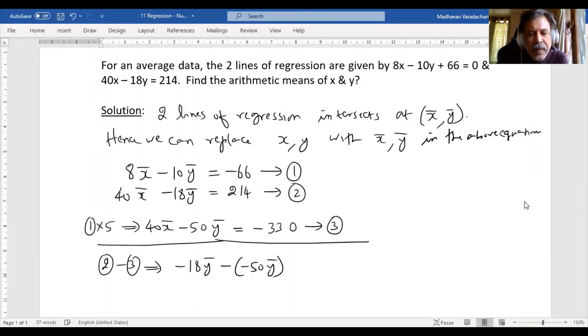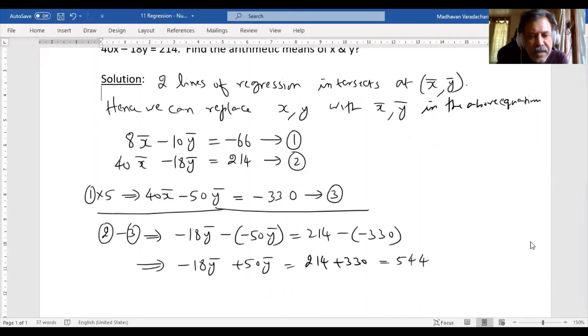Then this becomes -18Ȳ - (-50Ȳ) = 214 - (-330). This simplifies to -18Ȳ + 50Ȳ = 214 + 330 = 544. The left-hand side will be 32Ȳ = 544.